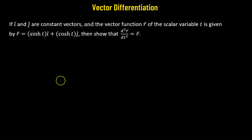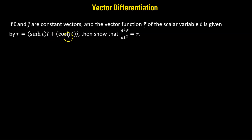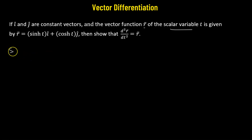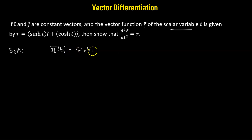We have two constant vectors, the unit vector i-cap and j-cap, and a vector function r, which is given by the hyperbolic sine function of t times i-cap plus the hyperbolic sine function of t times j-cap, where t is a scalar variable. We need to show that the second derivative of our vector function r is equal to the vector function r itself. So let's begin with our vector function r as a function of the scalar variable t.